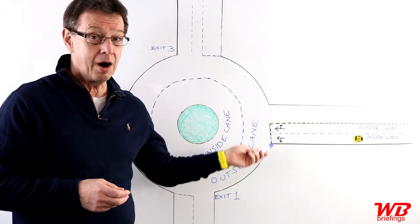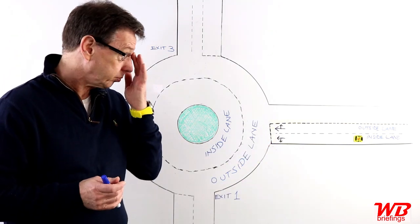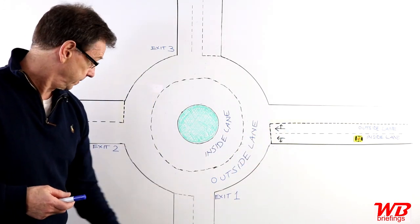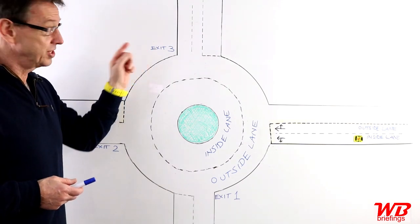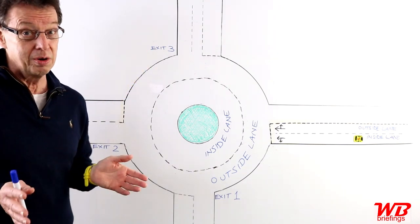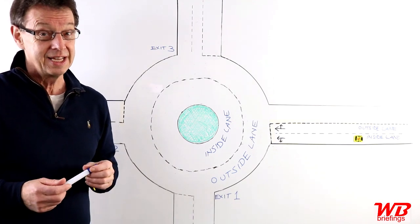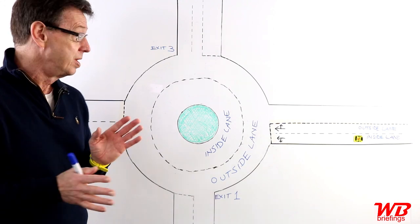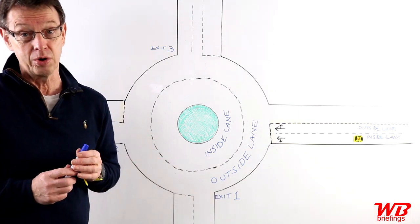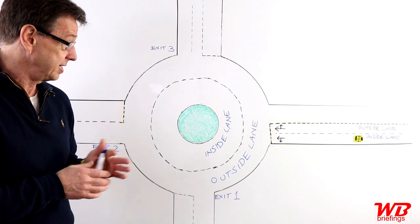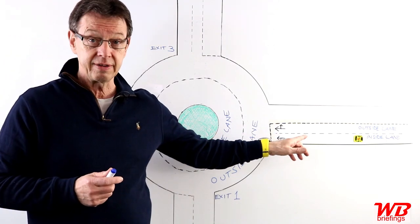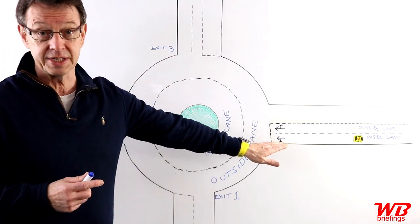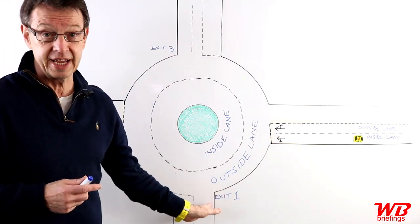On my whiteboard, you'll see I've got it marked exit one, exit two, exit three. There are more complex roundabouts with multiple exits, but we'll just deal with a simple roundabout with four exits. There are more complications but we'll just deal with this first. So we're approaching from here.